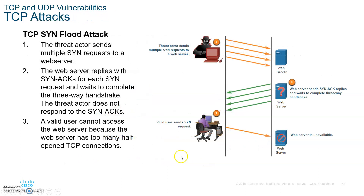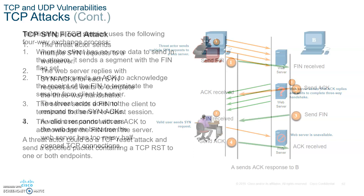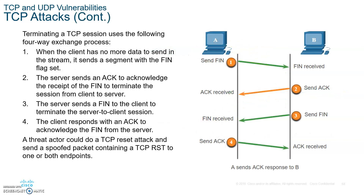With a connection-oriented protocol, you can launch a SYN attack by continuously sending SYN signals to make a connection. The server acknowledges but you keep ignoring it and sending more SYN signals — it's like taking a phone off the hook where the other party keeps trying to communicate back but you keep calling and ignore their replies.